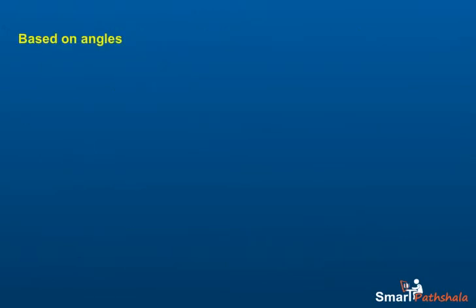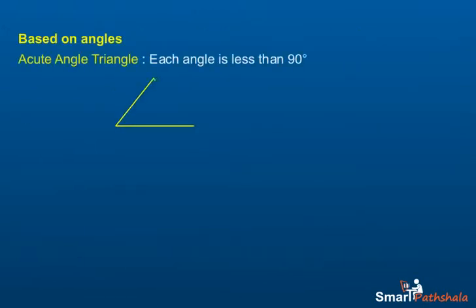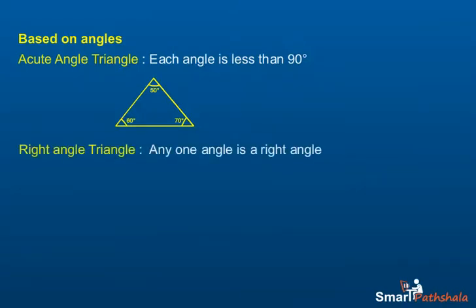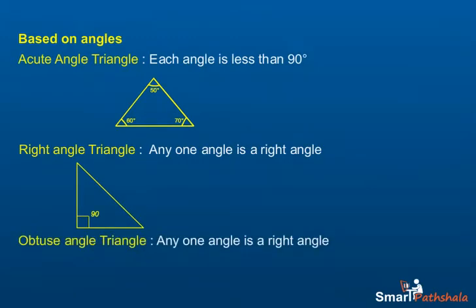Based on Angles: An acute angle triangle is one where each angle of the triangle is less than 90 degrees. A right-angled triangle is one where any angle of the triangle is a right angle. An obtuse-angled triangle is one where any one angle of the triangle is greater than 90 degrees.